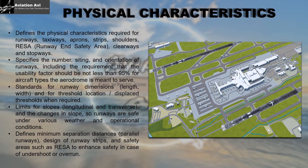The backbone of aerodrome design is adherence to its physical characteristics. This chapter specifies the requirements for designing a runway, taxiway, apron, strip, shoulder, RESA, clearway and stopway. It specifies the number, sighting and orientation of the runway, including how they should be designed to ensure a given usability factor. We will look into what should be the length and width of the runway.